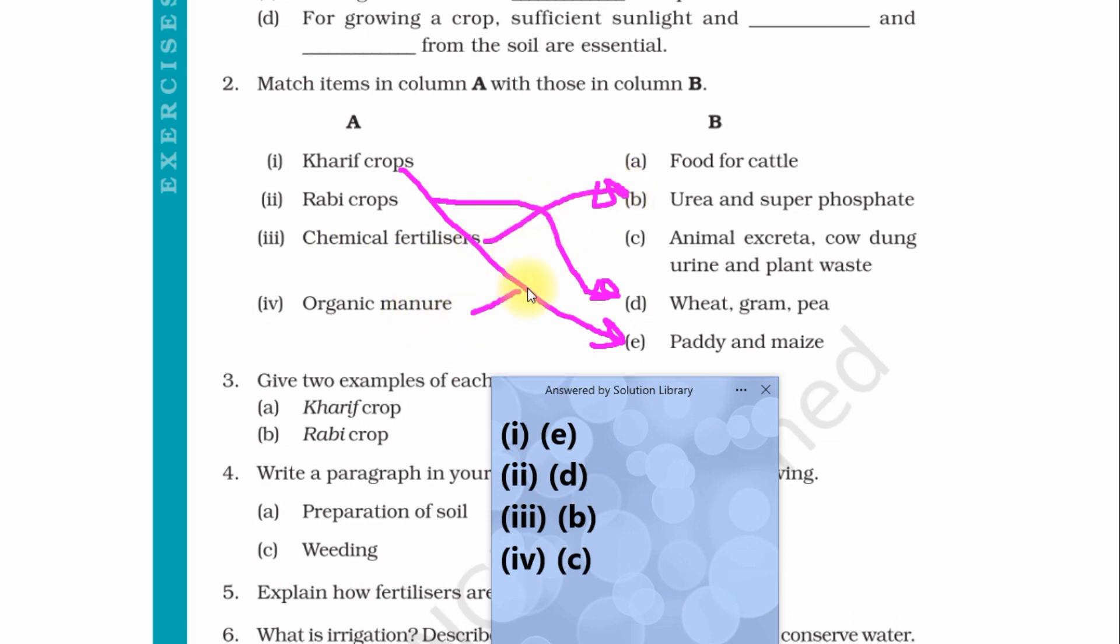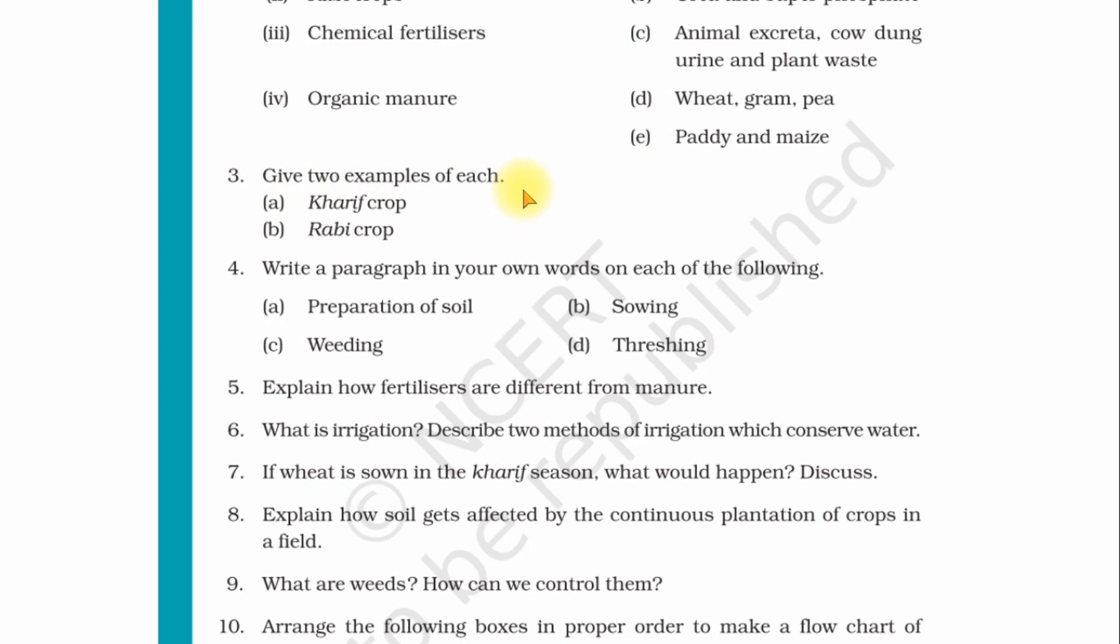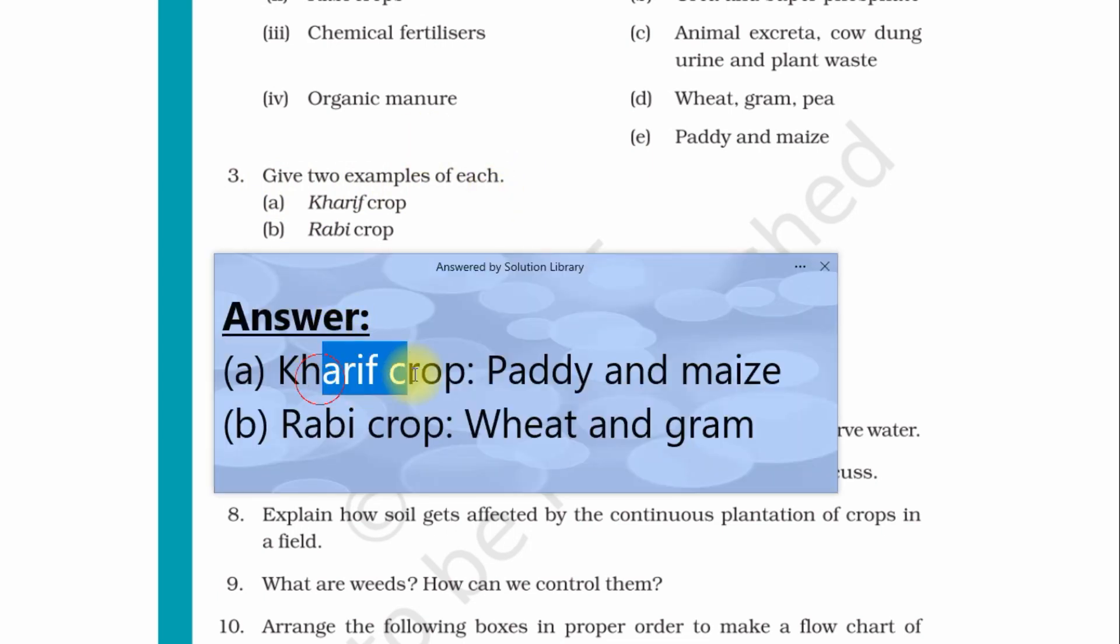Question number three: Give two examples of each. First, Kharif crop: the examples are paddy and maize. Second, Rabi crop: examples are wheat and gram.